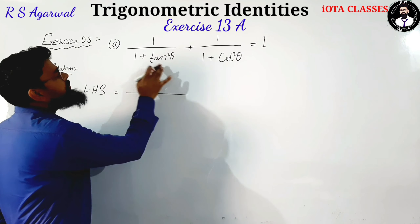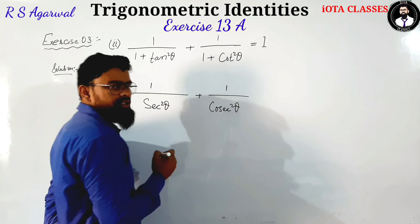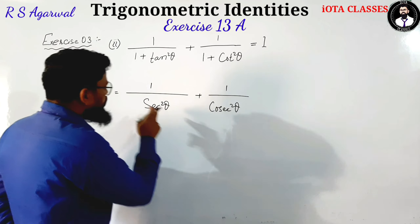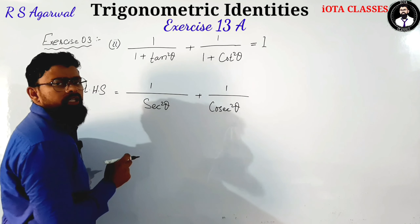LHS is our solution. I am going to solve LHS. What is our solution? 1 plus tan square theta. What is the formula? This is our solution: sec square theta.